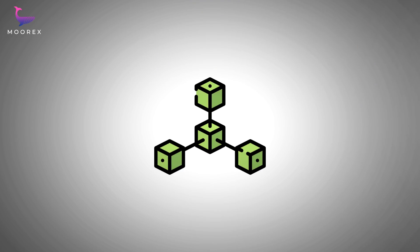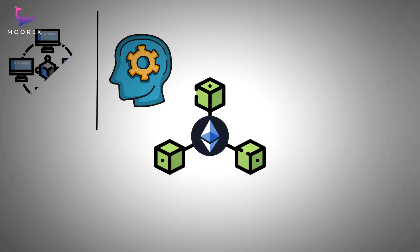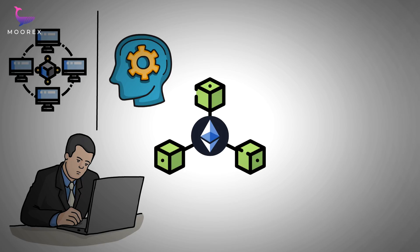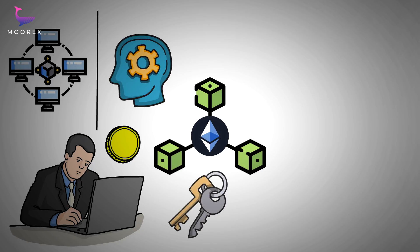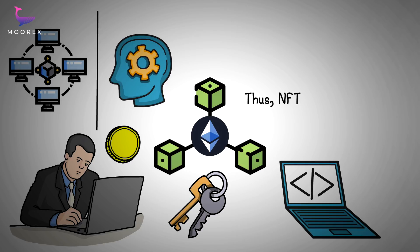The Ethereum blockchain is a platform combining traditional blockchain functionality with a key difference: the execution of computer code. Programmers on the Ethereum blockchain can create tokens representing any kind of digital asset, track its ownership, and execute its functionality according to a set of programming instructions. This is how NFTs, smart contracts, and dApps are made possible.